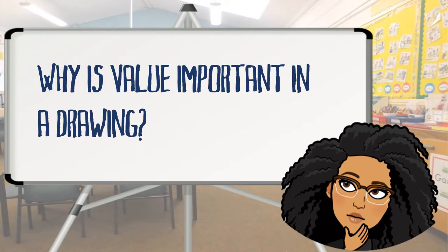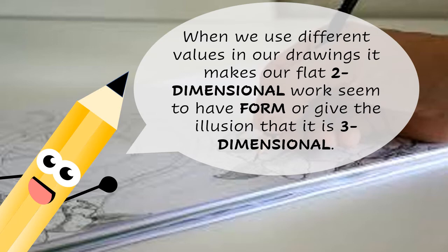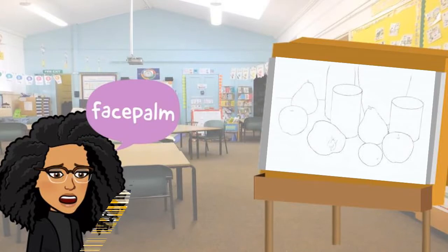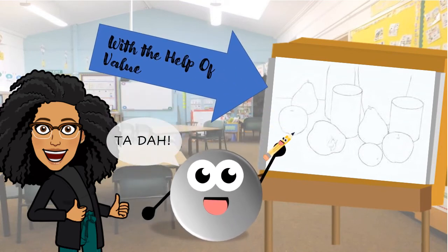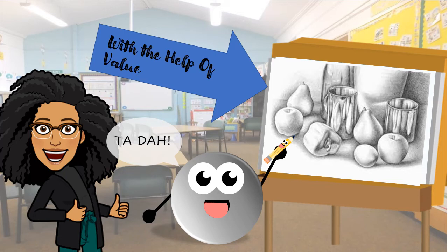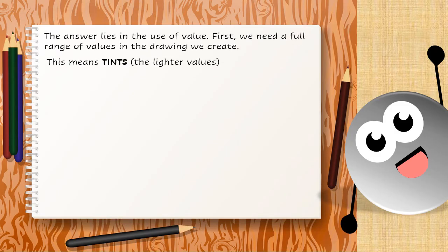Why is value important in drawing? Value is important as it helps us to create the illusion of light in a drawing. When we use different values in our drawings, it makes our flat two-dimensional world seem to have form, or gives the illusion that it's three-dimensional. How can you create the illusion of light in a drawing? The answer lies in the use of values.